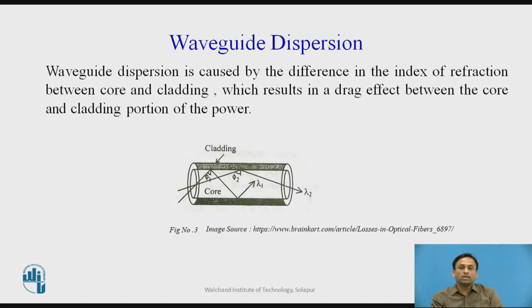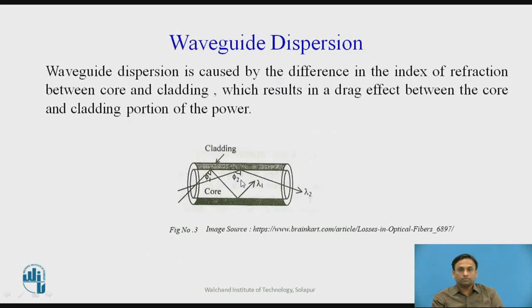Now we will see waveguide dispersion. Waveguide dispersion is caused by the difference in the index of refraction between the core and cladding. When light of different wavelengths — lambda 1 and lambda 2 — is incident at the acceptance cone, they are incident at different angles phi 1 and phi 2. There is a difference in the index of refraction between core and cladding, and the waveguide — which travels from transmitter to receiver — results in a drag effect between the core and cladding portions of the power. Such dispersions are known as waveguide dispersion.